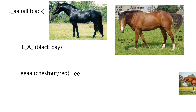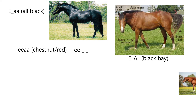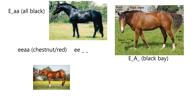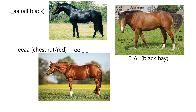Then we have the chestnut: the genotype is e/e and a/a. The key point is that if there's e/e, there's no black to distribute — whether to leave on the body or point to the extremities. So you get a chestnut horse. The genotype is e/e, and we don't care about the A because there's no black to distribute.